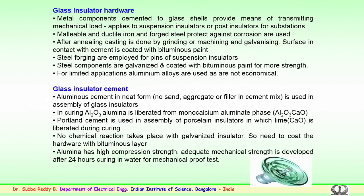For cementing, similar to porcelain or ceramic insulators, alumina cement in a neat form — containing no sand, aggregate, or filler — is used for the assembly of glass insulators. During curing, aluminum trioxide — alumina — is liberated from the mono calcium aluminate phase. This contrasts with Portland cement used for porcelain, where lime is liberated during curing.